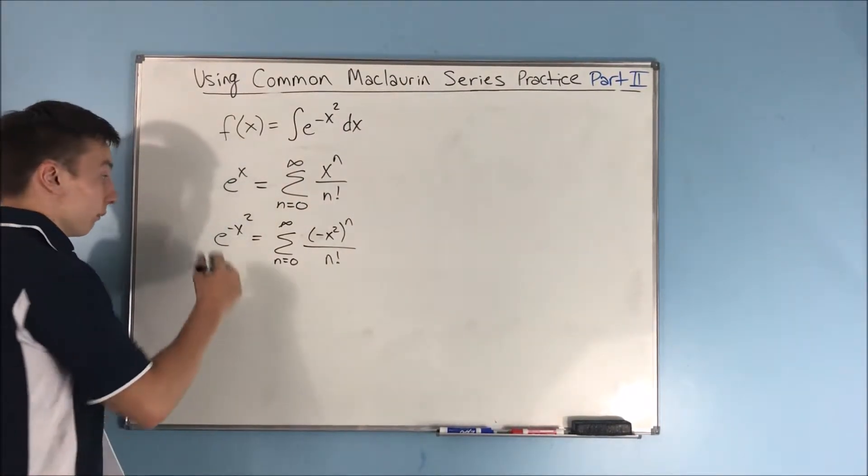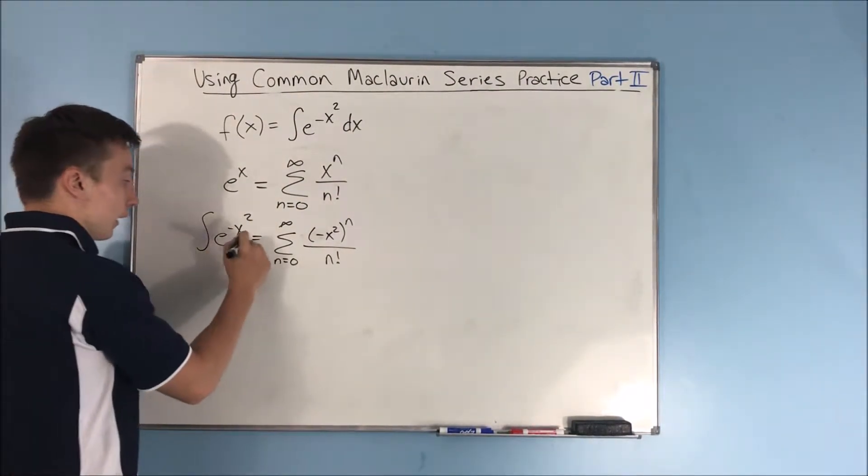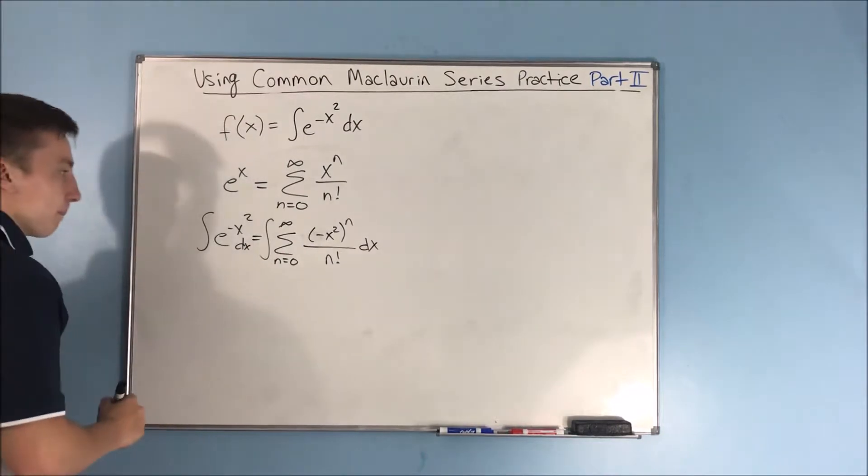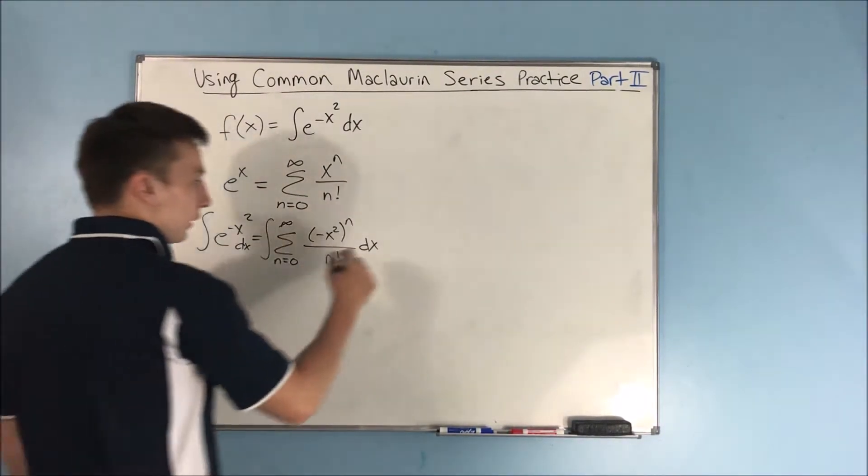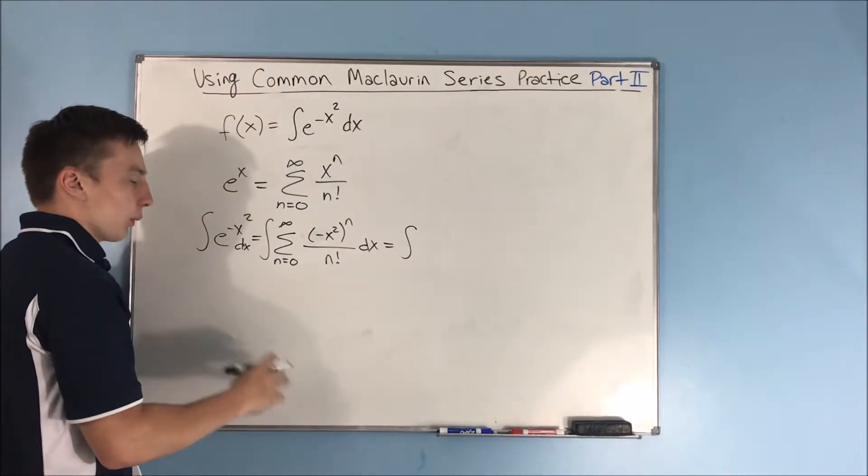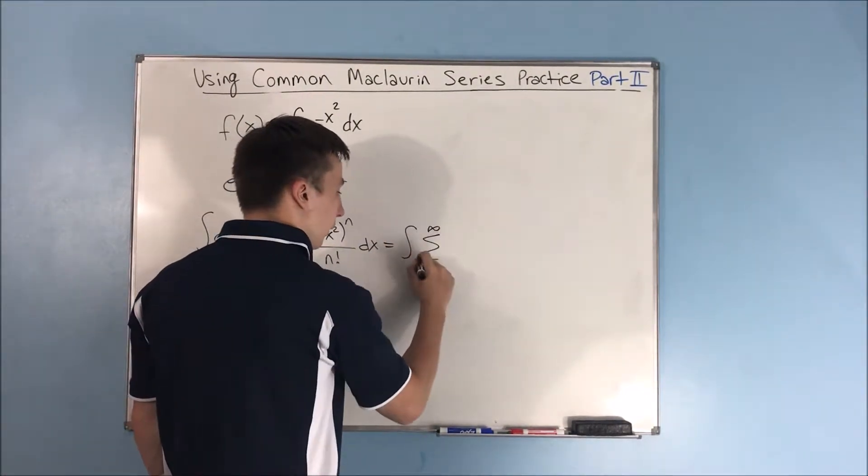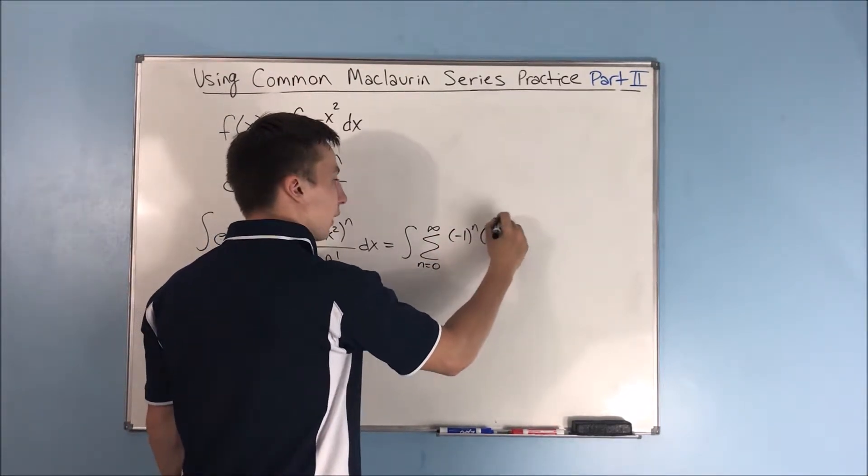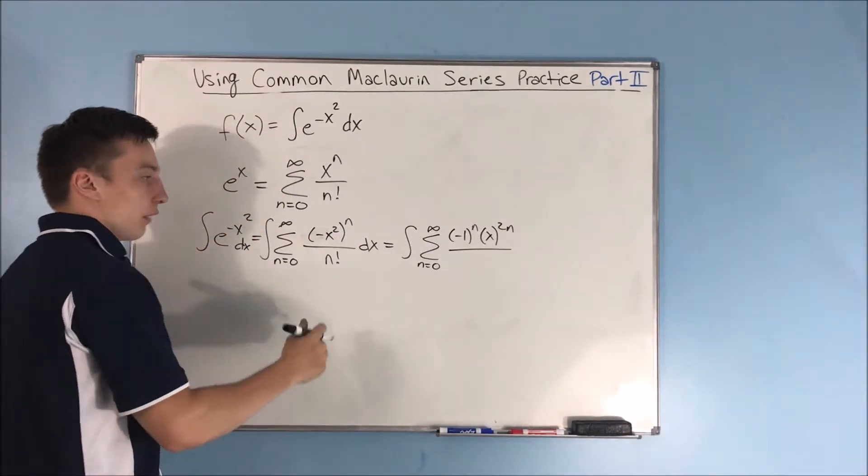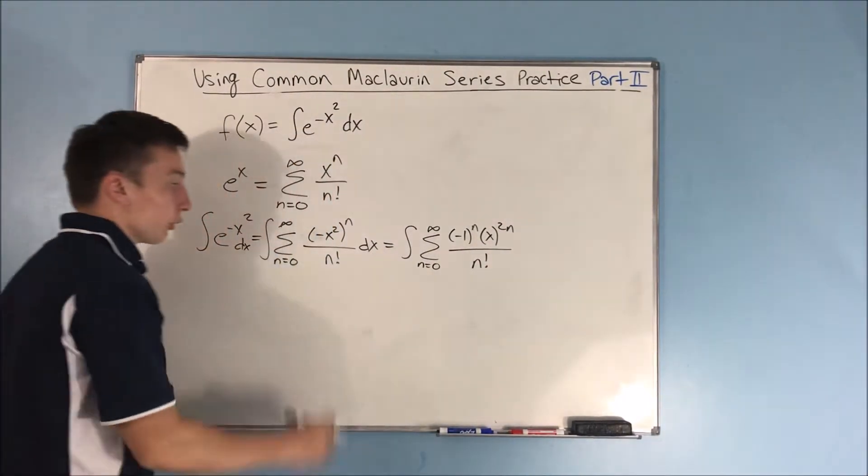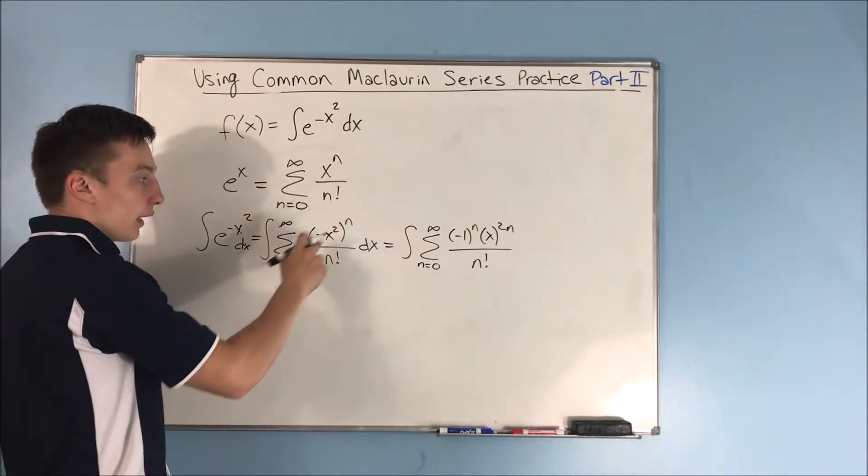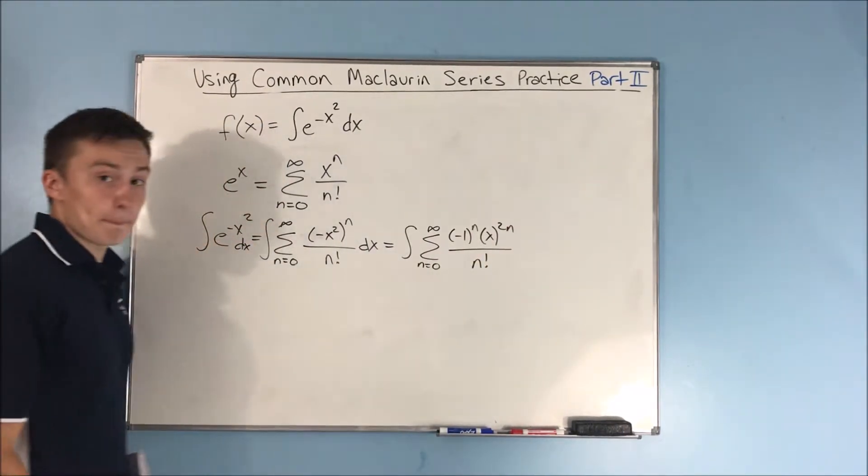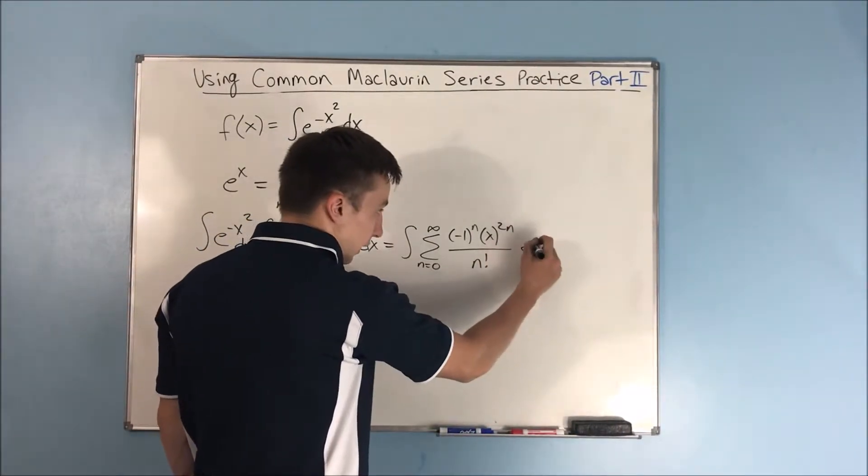So now what we do is take an integral of each side. We know how to integrate power series, so this works. Now before we integrate this, I'm going to make this look a little nicer. We're going to do the integral of the sum from n equals 0 to infinity - we're going to pull out a negative 1 to the n here and be left with an x to the 2n over n factorial. I just pull out that negative, that's going to be negative 1 to the n, and then I'm left with x squared to the n, which is the same thing as saying x to the 2n. And of course, got to remember that dx right on the end.